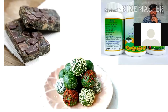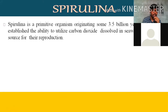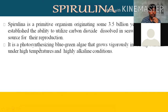Now let's start with our main lecture on spirulina. Spirulina is a primitive organism originating some 3.5 billion years ago that established the ability to utilize carbon dioxide dissolved in seawater as a nutrient source for reproduction. It is a primitive organism originating around 3.5 billion years ago, and we still don't have that much research on spirulina.